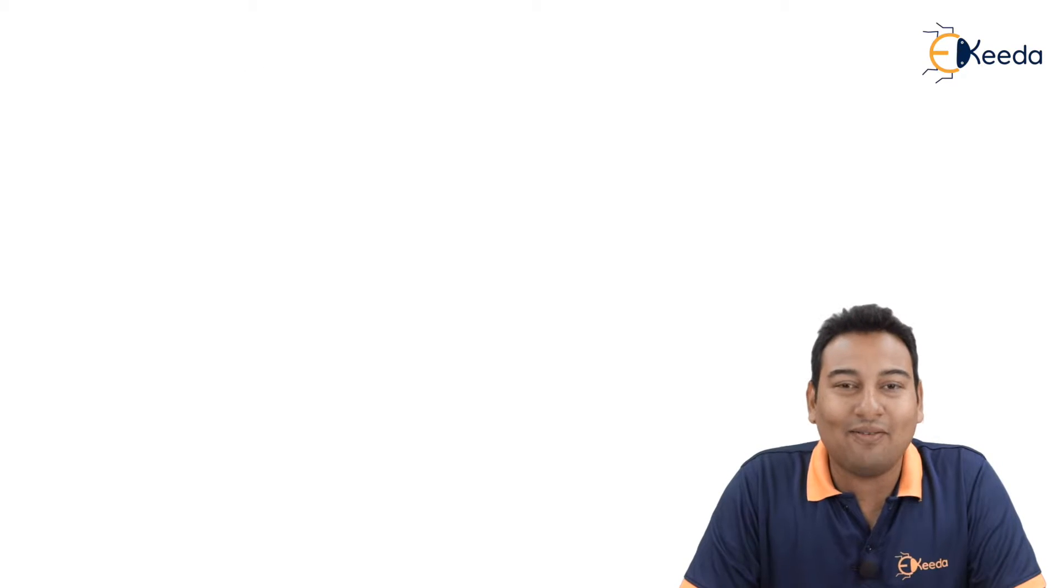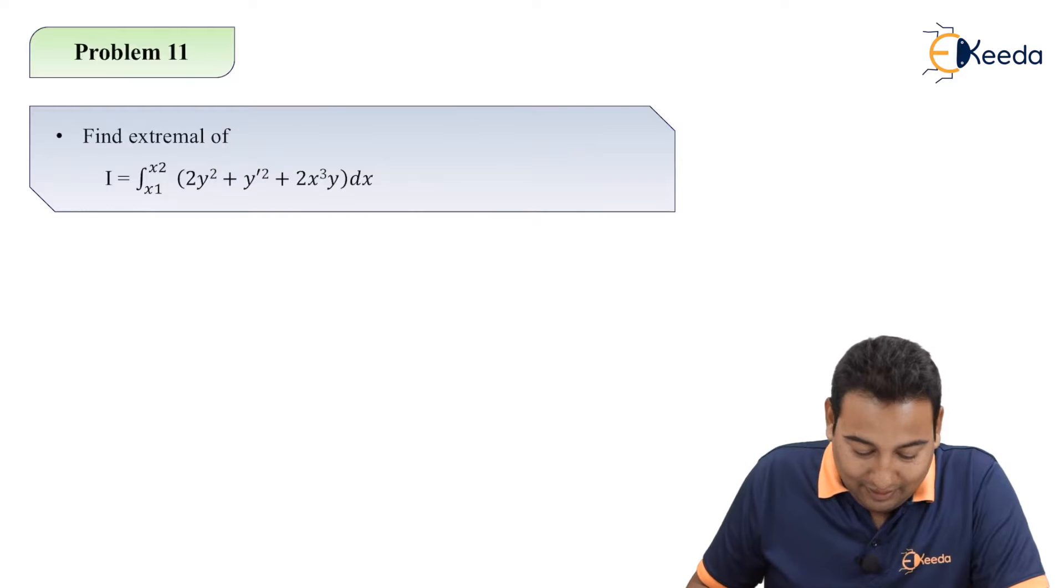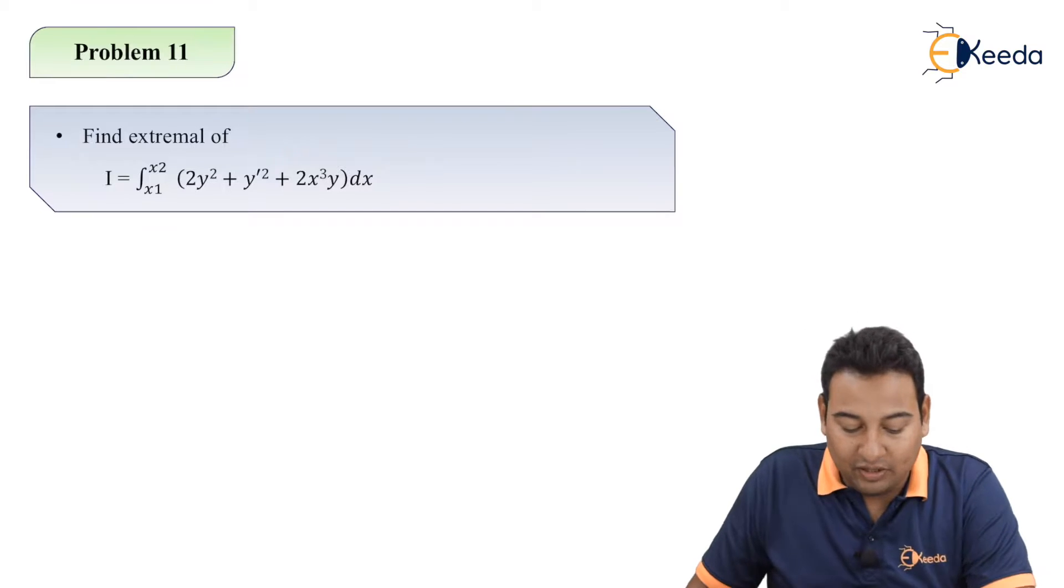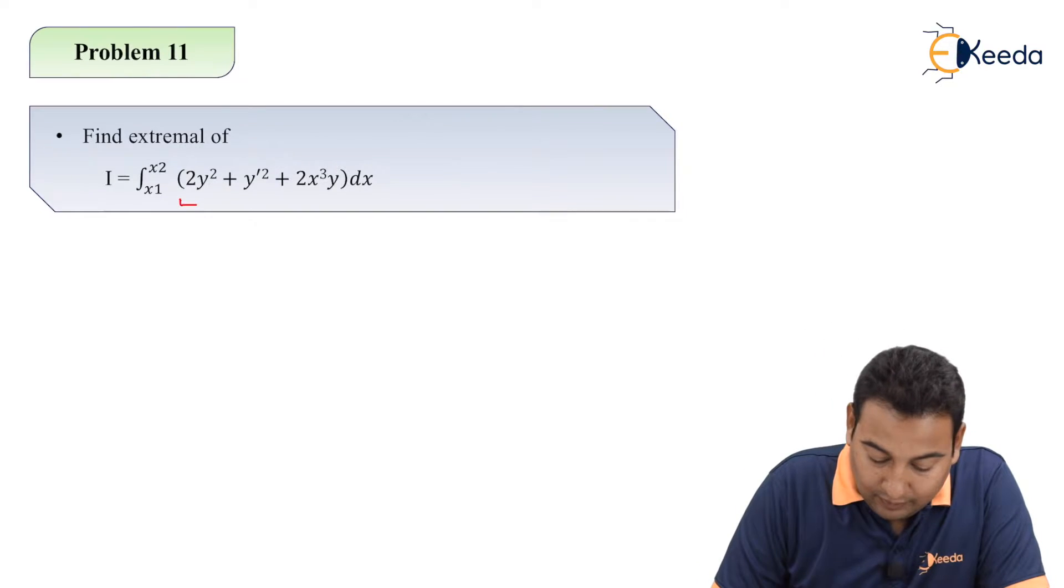Welcome back friends, let's have a look on the given problem. Here we need to integrate between x1 to x2, 2y square plus y dash square plus 2x cube y dx. This is the functional given in the problem.